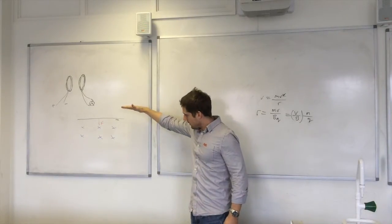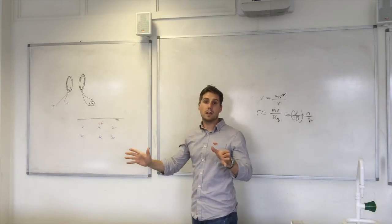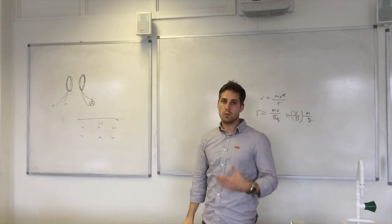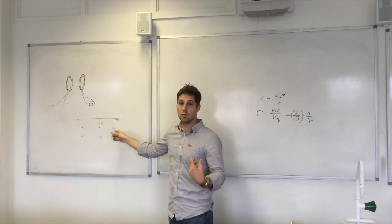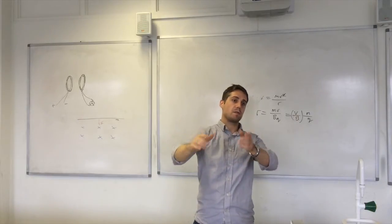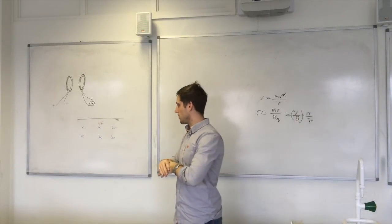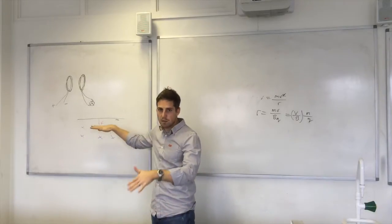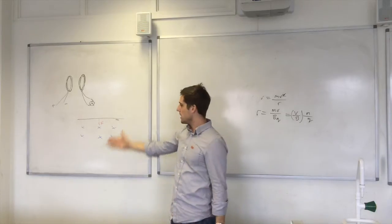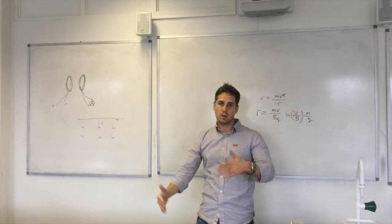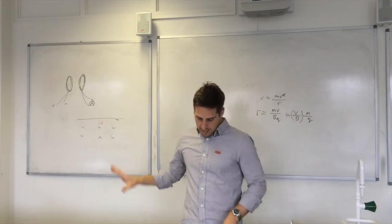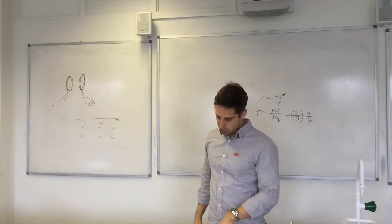It's the perpendicular component that counts for how much current you have flowing. You could move this conductor very fast parallel to the field lines and it will produce zero current, as long as you move it exactly parallel. But if you move it perpendicular, you get maximum current. If you move it somewhere between, you get something in between in terms of the induced current. That's for a straight wire.